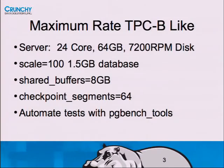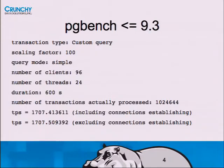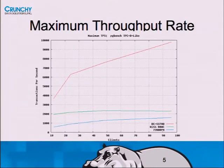This is what PG bench looked like in earlier versions of Postgres. You give it a number of clients, a number of threads, and a duration - all these tests run for 10 minutes, enough time to see the database go through at least one full cycle of activity. The number most people stare at is the TPS number. In this example, running flat out as fast as the database can go, we get just over 1700 transactions per second.